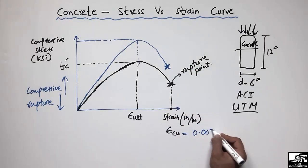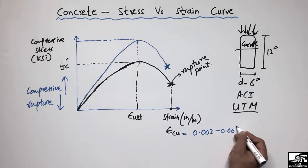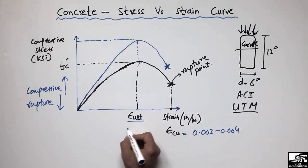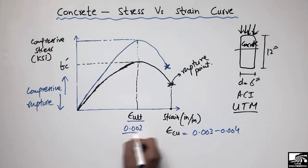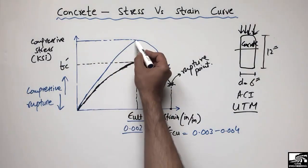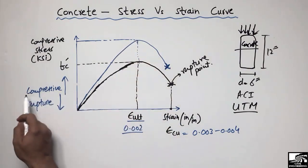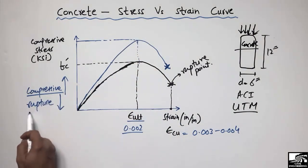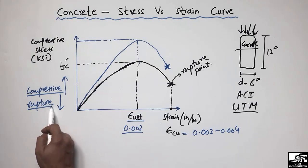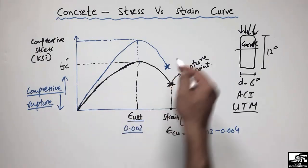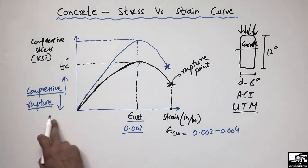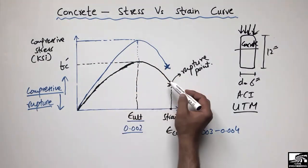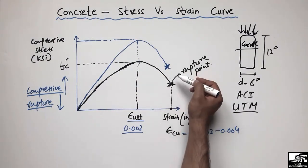The rupture strain for concrete typically ranges from 0.003 to 0.004, while the strain at peak (ultimate) strength is around 0.002. So as we increase the compressive strength, the rupture strain decreases. This is an important observation from comparing normal-strength and high-strength concrete curves.